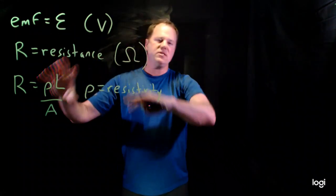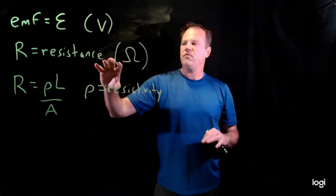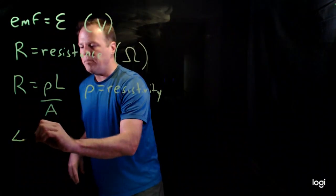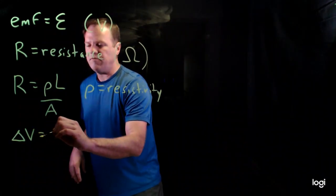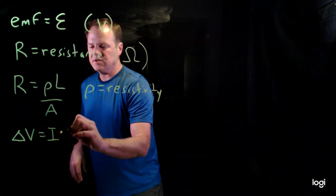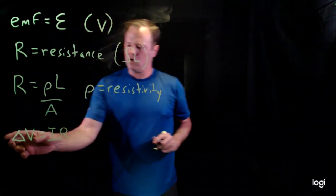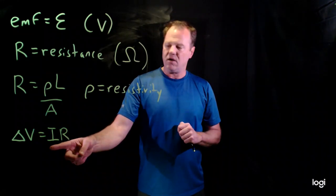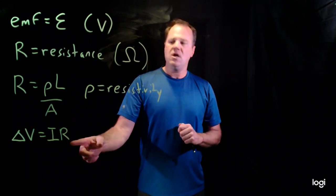And then the way to put these concepts together of EMF and resistance is with Ohm's law. So Ohm's law is an empirical relationship. It's not actually a fundamental law of physics. It says the potential difference across an ohmic device is equal to the current through that device times the resistance of that device.